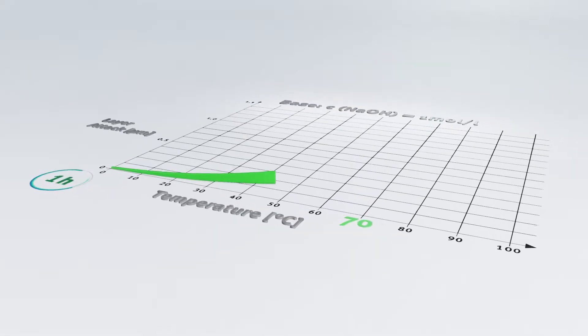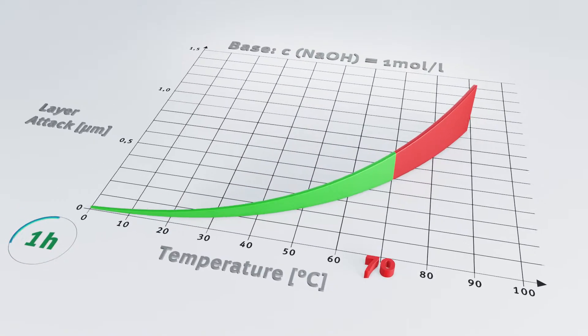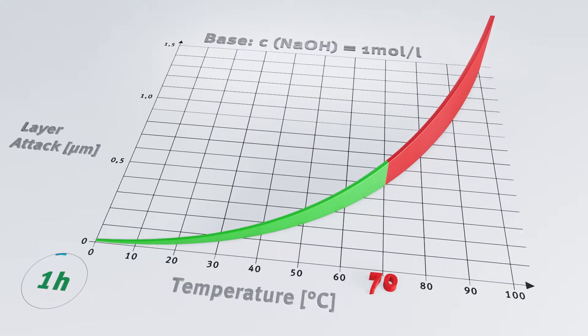This figure shows glass corrosion tendency as a function of temperature in interaction with time and alkalinity.